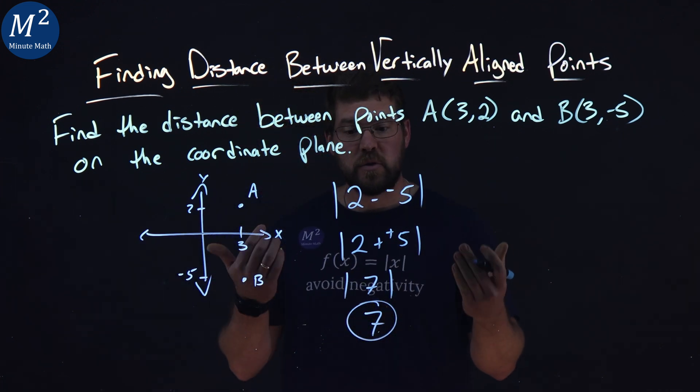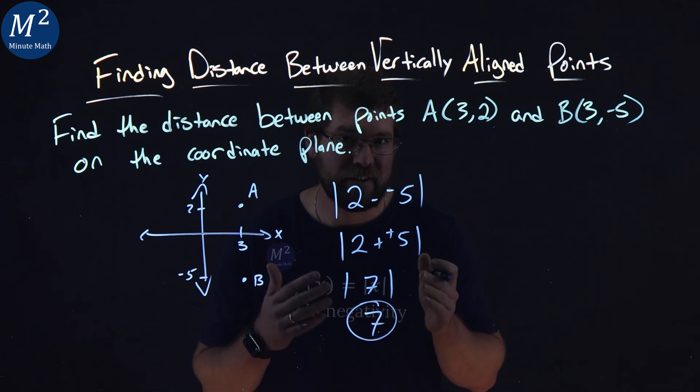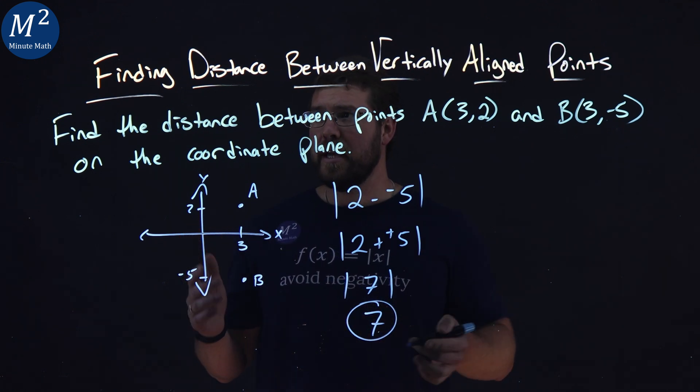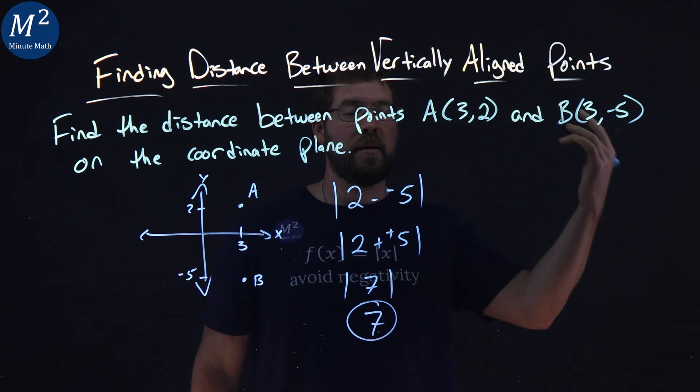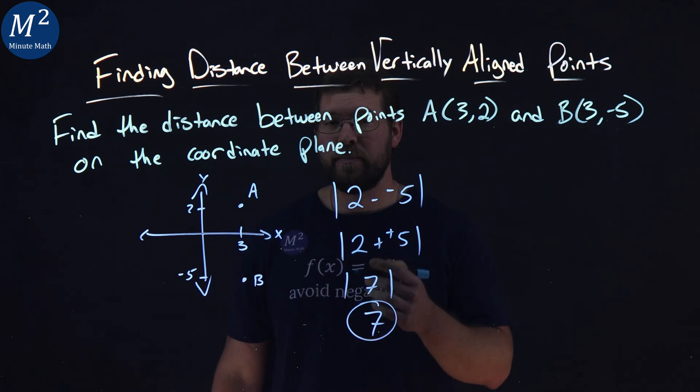And so, the distance between these two points is 7 units. I hope you learned something here about finding distance between vertically aligned points. And as always, thanks for watching.